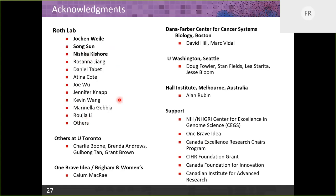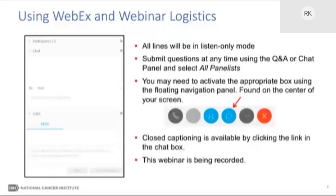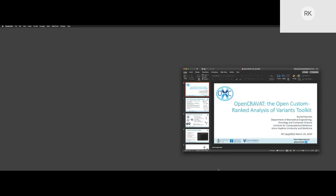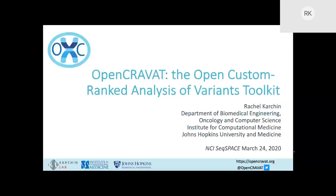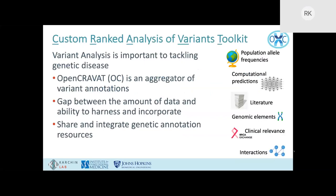Next up is Rachel Karchin. I'm going to talk today about OpenCRAVAT — the Open Custom Ranked Analysis of Variants Toolkit. OpenCRAVAT was designed to address the issue that variant interpretation is extremely important, but the different types of information about variants are scattered all over the internet.